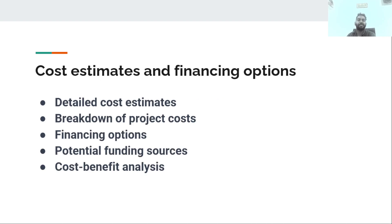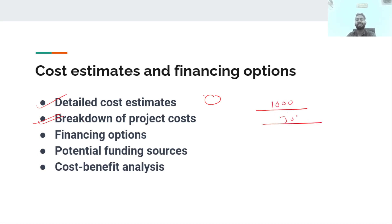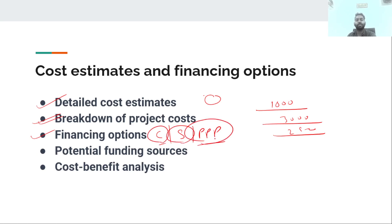For cost estimates and financing options, whatever the project is, we need to do a detailed cost estimation — breaking down all costs across different phases, from the initial phase through subsequent phases. Financing options include the central government, state government, or the PPP (Public-Private Partnership) model. We also need to identify potential funding sources and conduct a cost-benefit analysis.